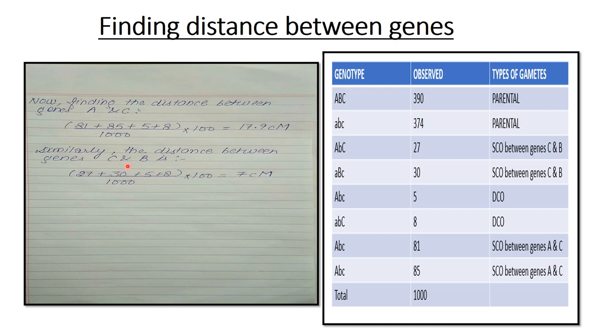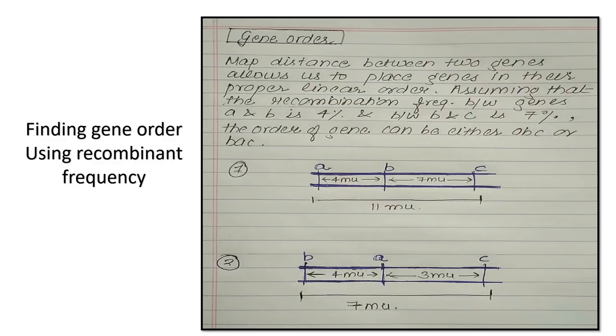Similarly you have to find the distance between C and B. Remember, you don't have to take the parental combinations. So here recombinants are 27, 30, 5 and 8. You don't have to take the parental genotypes. So the resultant will be this. As simple as that.